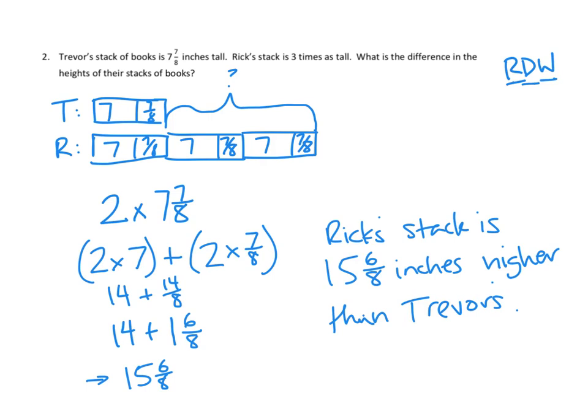Excellent. So this is a really good example of how we read through our problem. We make a drawing that very carefully tells us exactly what we know. We look for the question, because the question could be any number of things. In this case, it's for the difference between Rick's height and Trevor's height in their stacks of books. And then we develop our math sentence. And once we're sure what the question is, we can work our math sentence out before we write our answer. Let's take a look at one more problem tonight.